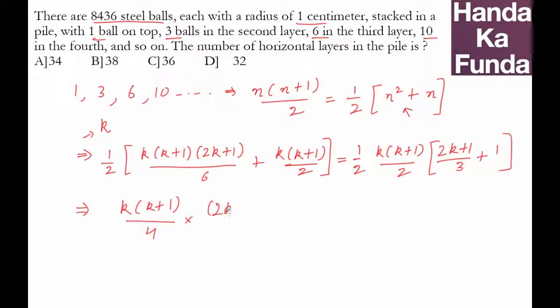This becomes k(k+1)/4 × (2k+4)/3. Simplifying, you get k(k+1)(k+2)/6, which equals our total number of balls, 8436. This gives us the identity k(k+1)(k+2) = 8436 × 6.